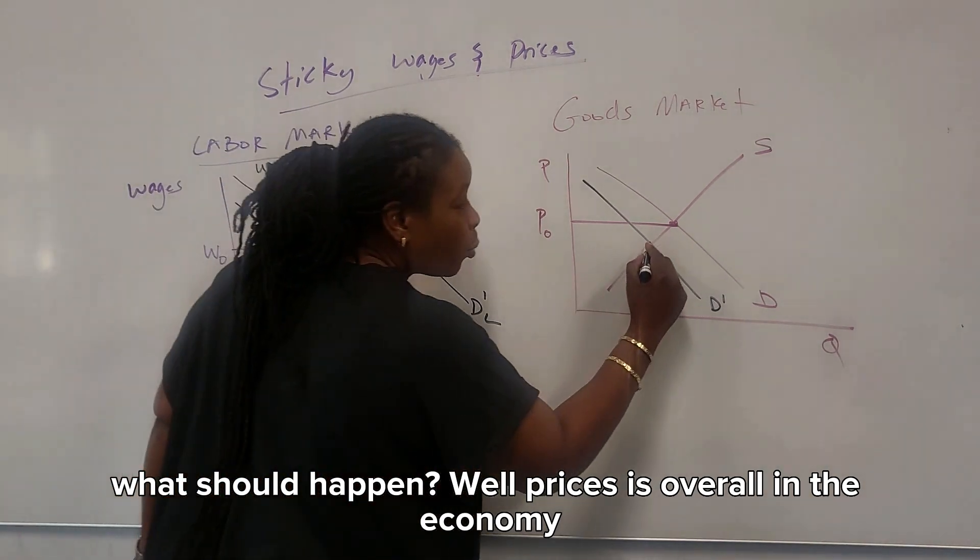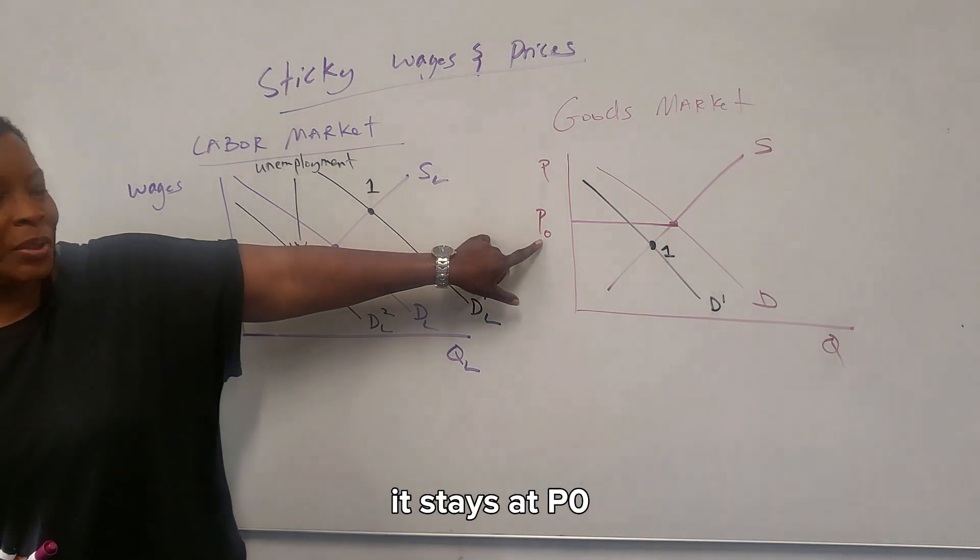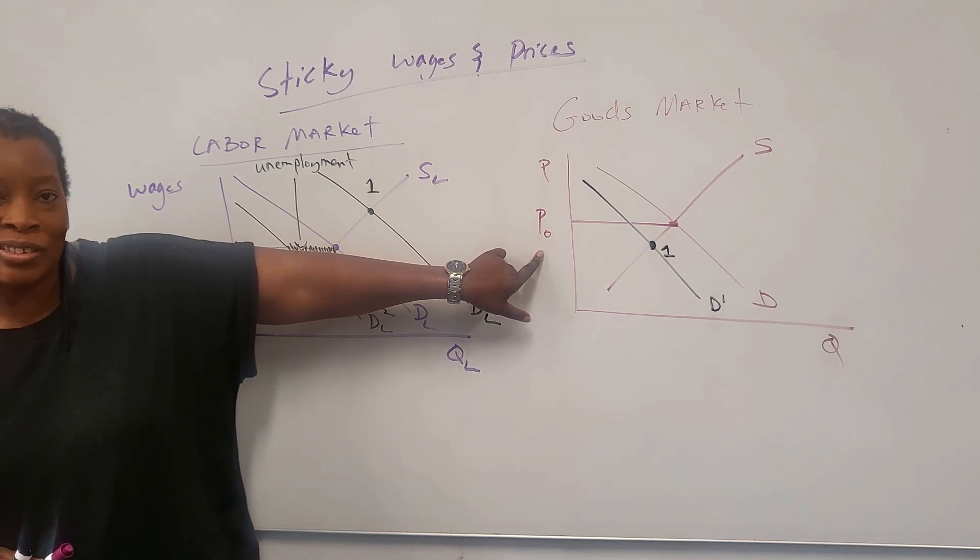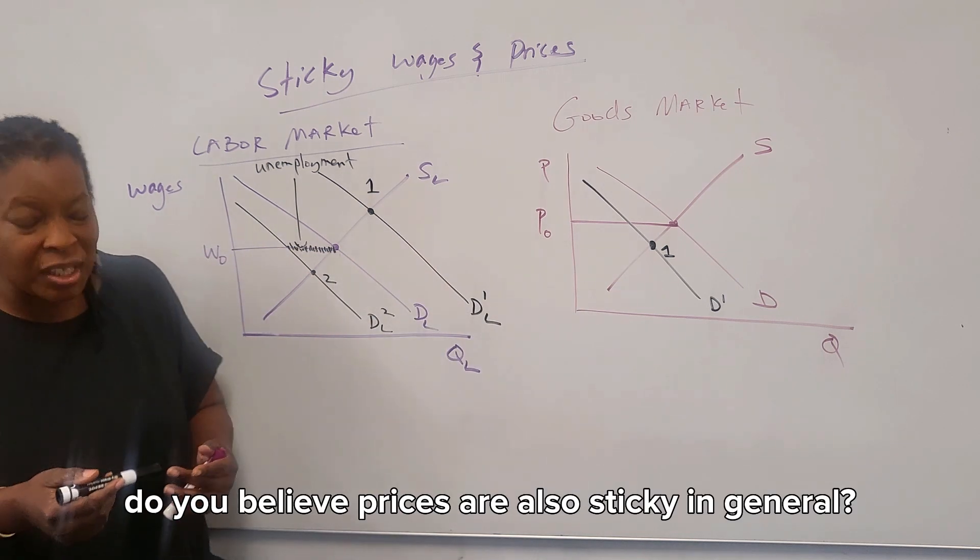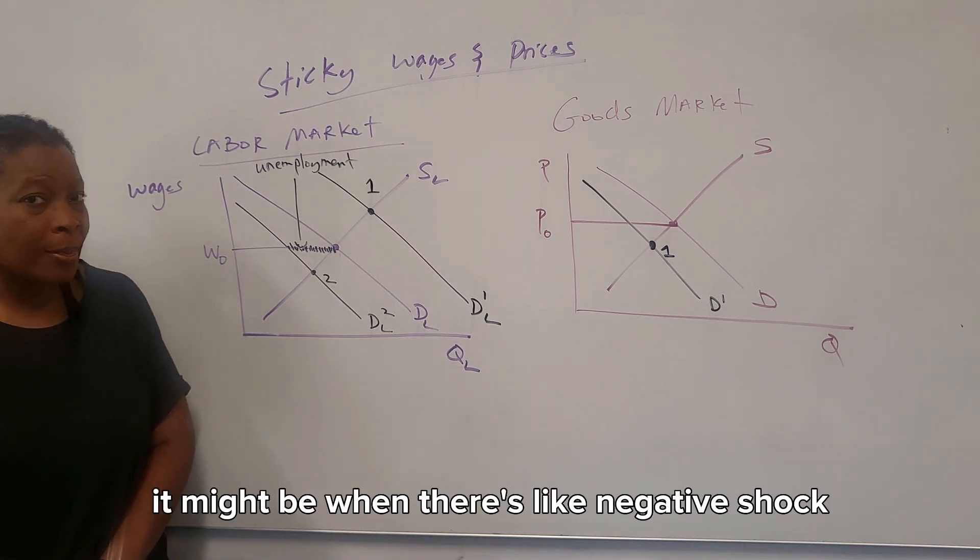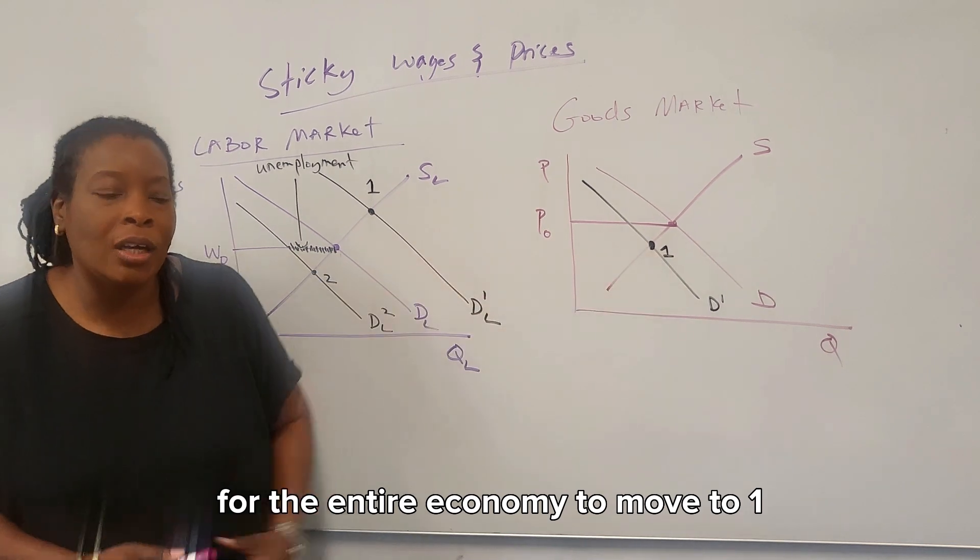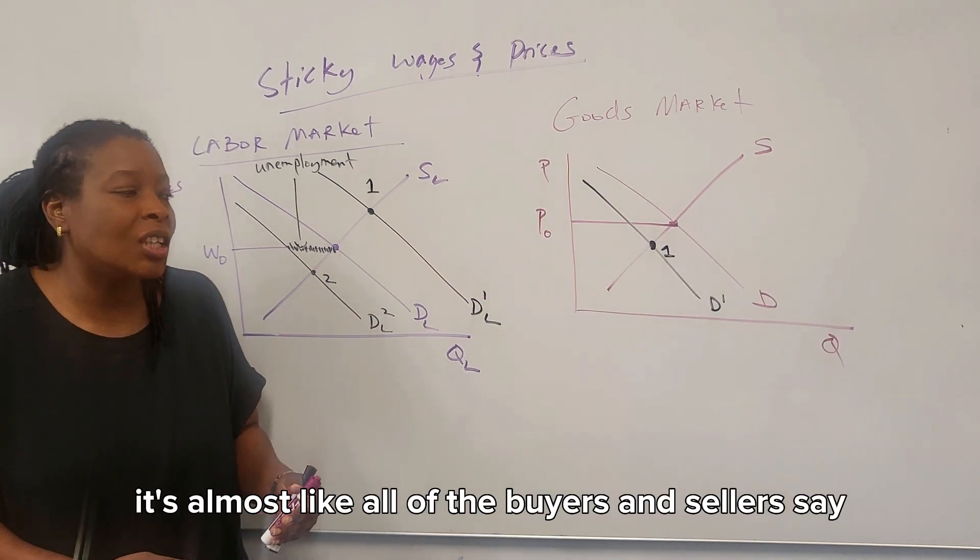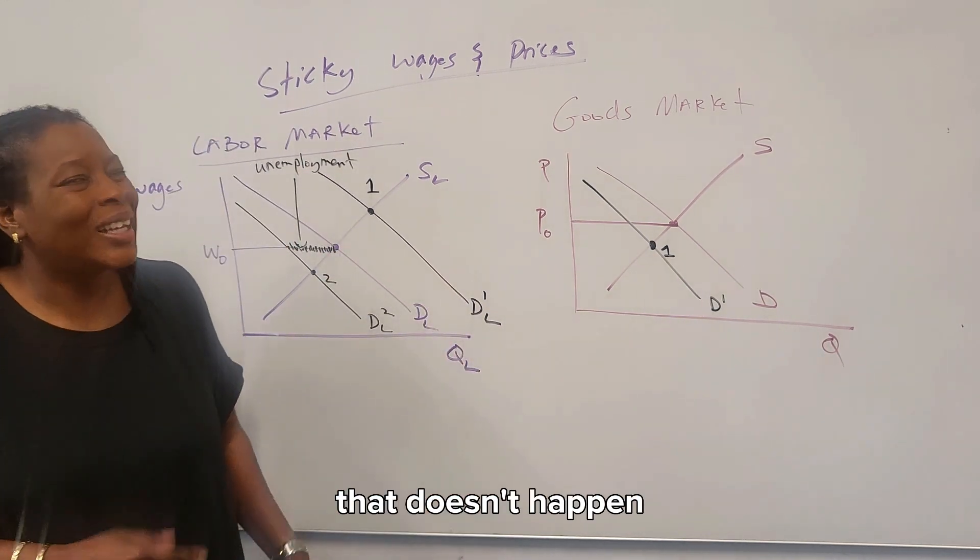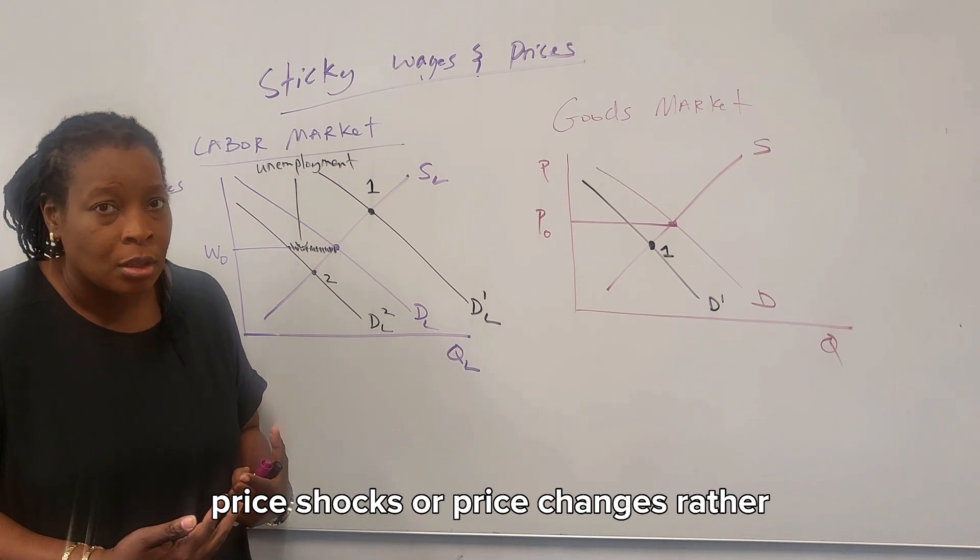Negative shock in the economy? Well, here is the D1. What should happen? Well, prices overall in the economy should drop. But if they're sticky, what happens? It stays at P0. So you end up with an excess supply of goods. Now the question is, do you believe prices are also sticky in the general market? It might be. When there's a negative shock for the entire economy to move to one, there has to be coordination. It's almost like all of the buyers and sellers say, we're going to negative shock, so let's lower the price altogether. That doesn't happen. It takes a little bit of time for businesses to adjust the price shocks or price changes rather.